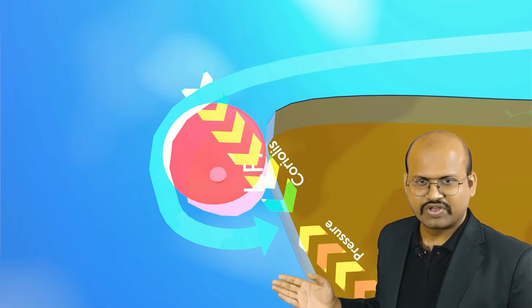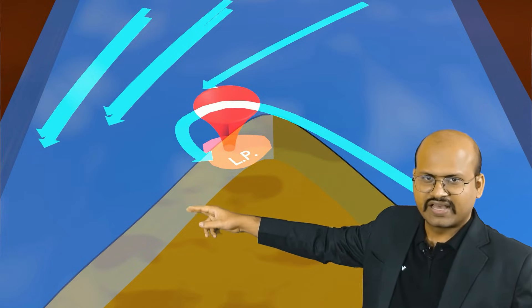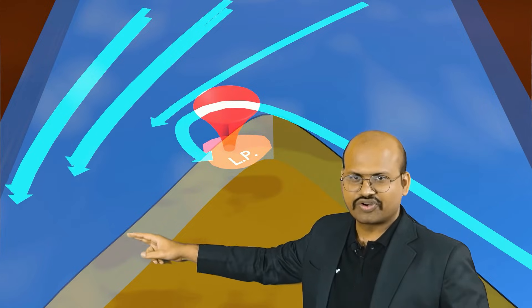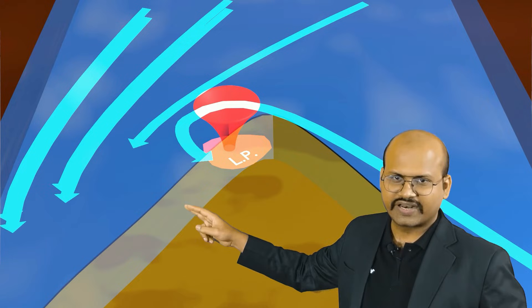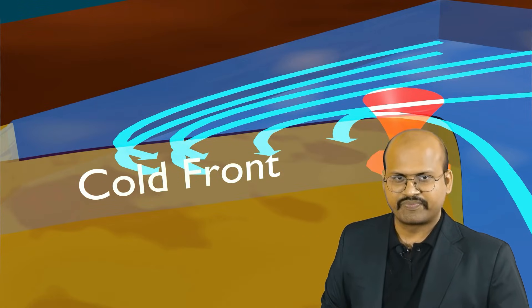Similarly, other cold air in this cold air mass is also deflected. We see that these wind currents are deflected and they come to this boundary of cold and warm air, trying to move this boundary — thus forming a cold front.